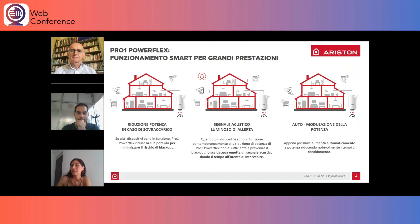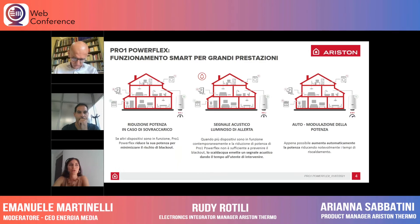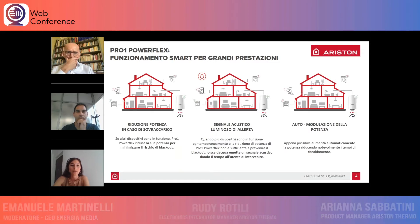Nella prossima slide vediamo quello che ho appena accennato in maniera più schematica, e aggiungo un altro valore del prodotto. In caso di sovraccarico lui si automodula riportando la potenza nei limiti stabiliti, garantendo comunque acqua calda. Se però l'abbassamento di potenza non dovesse bastare — perché l'utente ha acceso il forno, la lavastoviglie, lo scaldabagno e quant'altro — lui avvisa comunque l'utente emettendo un bip sonoro, affinché capisca che deve andare a scollegare qualche altro dispositivo. Lo scaldabagno ha fatto il massimo possibile abbassandosi, ma ti avvisa nel caso tu abbia acceso comunque troppi dispositivi.